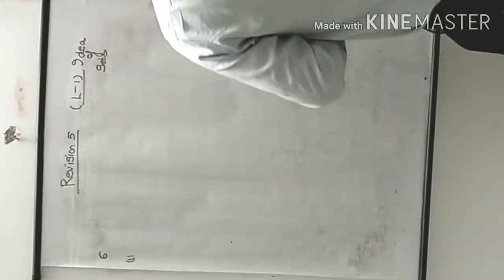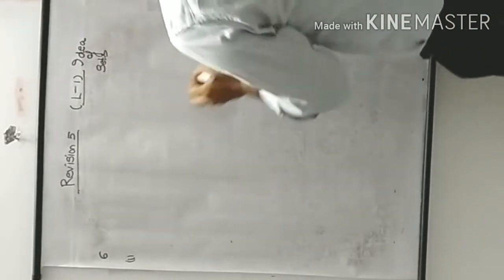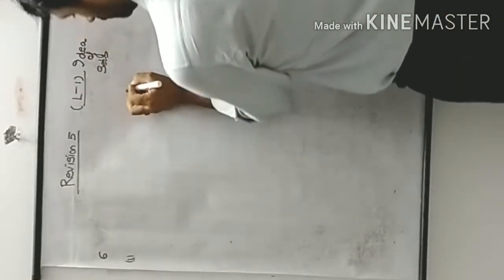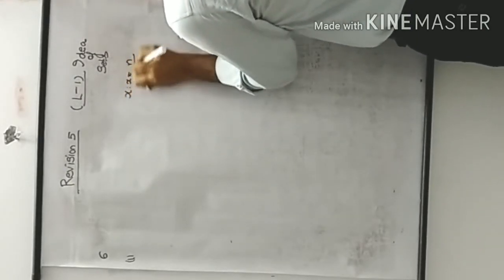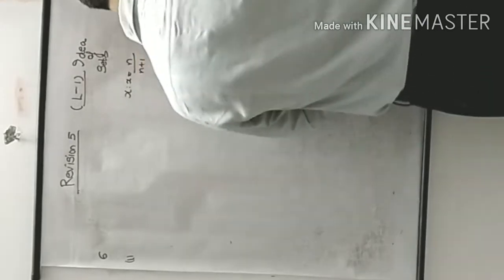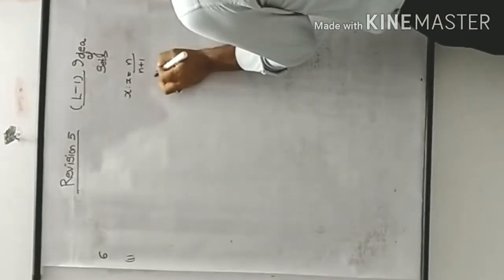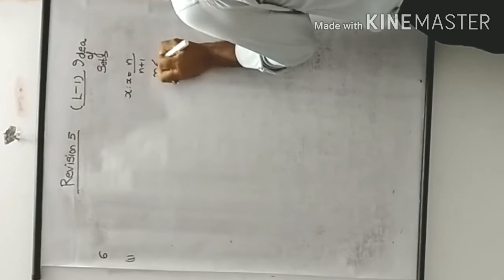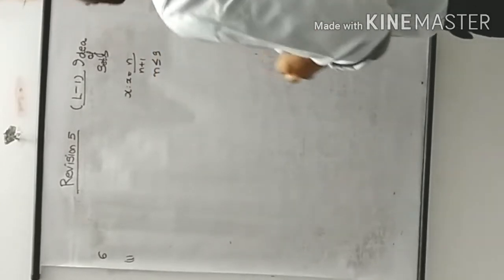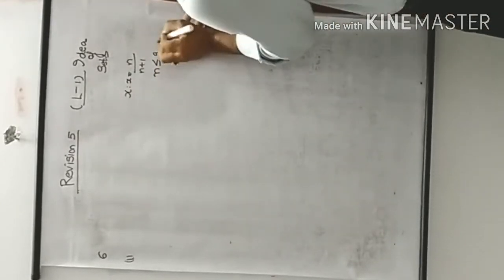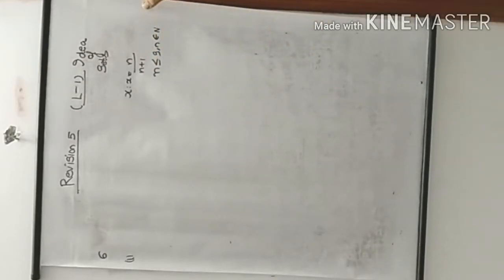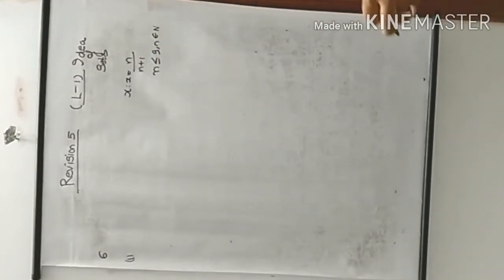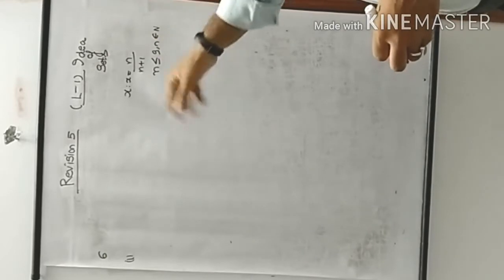The question says: x such that x is equal to n divided by (n+1), and n is an element of natural numbers and n is less than or equal to 9.